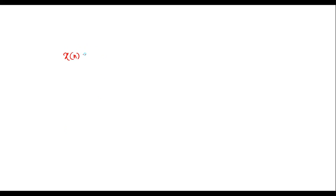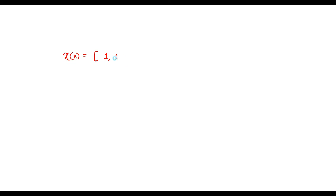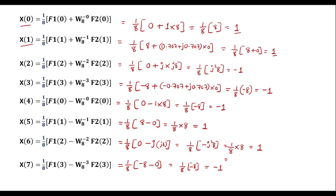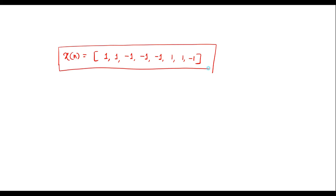x(7) = (1/8)·[f1(3) - W8^(-3)·f2(3)] = (1/8)·[-8 - 0] = -1. Therefore, the final sequence x(n) = {1, 1, -1, -1, -1, 1, 1, -1} for n = 0, 1, 2, 3, 4, 5, 6, 7. This sequence is calculated using the inverse DIF FFT algorithm. Thank you for watching.